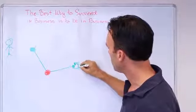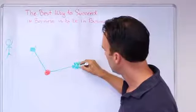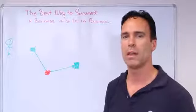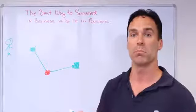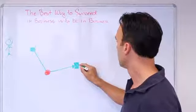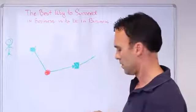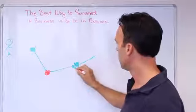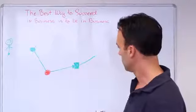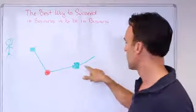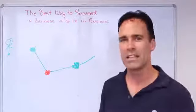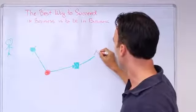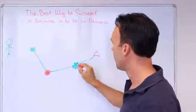So they again adjust the business model and now they start selling green squares. And business picks up a little bit more. Now when they start selling their green squares, business picks up but they're still not achieving the level of success that they want.